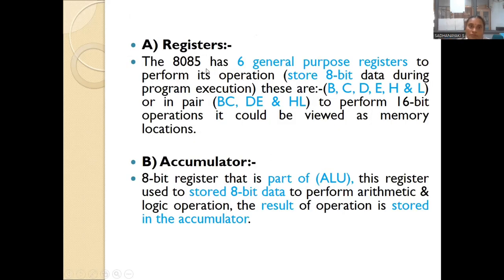There are 6 general-purpose registers — B, C, D, E, H, and L — each storing 8-bit data. They can also be used in pairs — BC, DE, and HL — to perform 16-bit operations. They can be viewed as memory locations. If you need to store more than 8 bits, you can combine these registers as pairs BC, DE, and HL to store 16-bit values in the general-purpose registers.